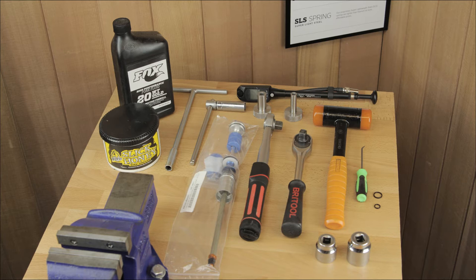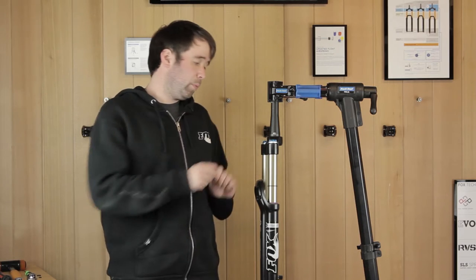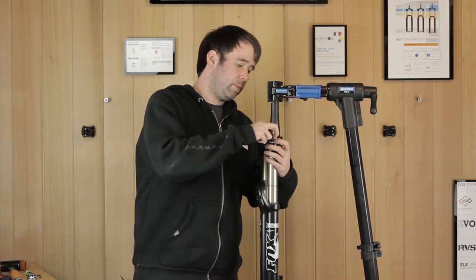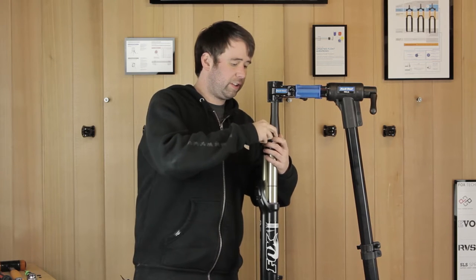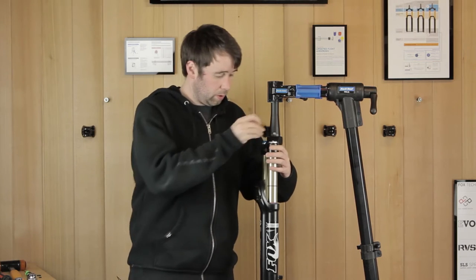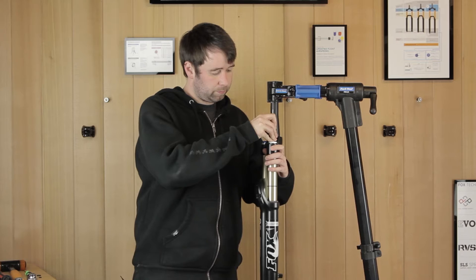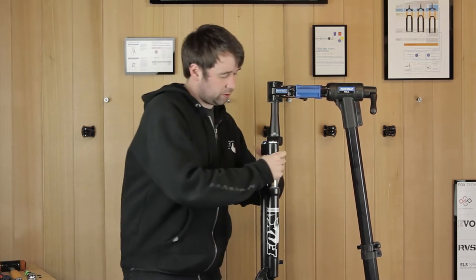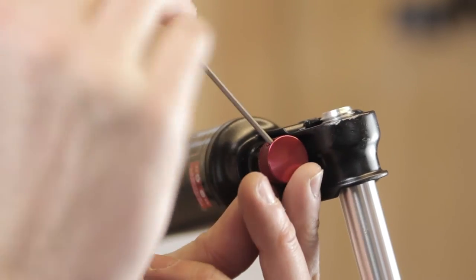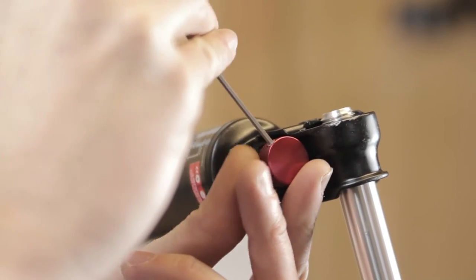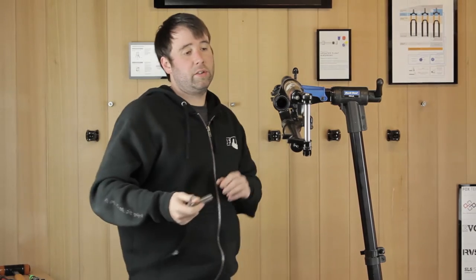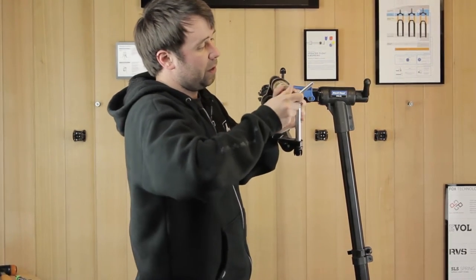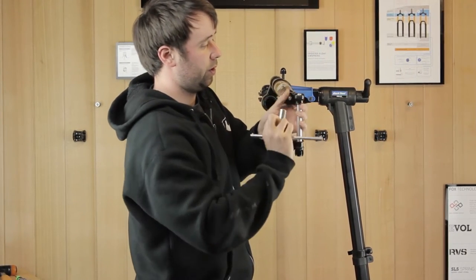To start off we'll remove the adjuster from the fork and release the air. Push down on the Schrader valve. Once the air has been released, start by removing the adjuster using a 2mm allen key. Now on the cartridge side, this uses a 15mm, just wind that off.